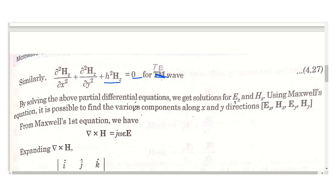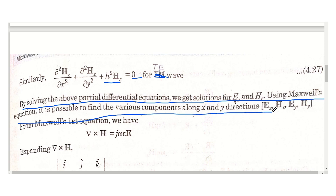Now we are going to apply Maxwell's equations to find the field components in the x and y direction. By solving the above partial differential equations, we get solutions for Ez and Hz. Using Maxwell's equations, it is possible to find the various field components along the x and y directions — that is, Ex, Hx, Ey, and Hy.